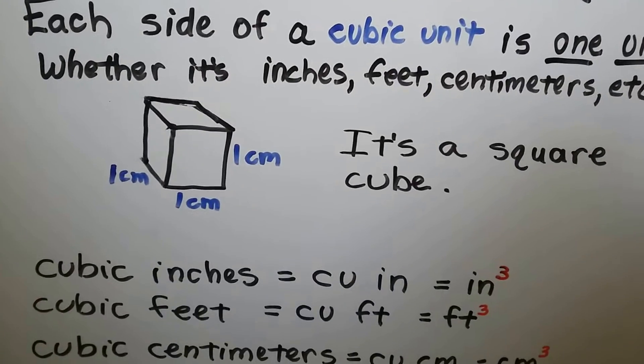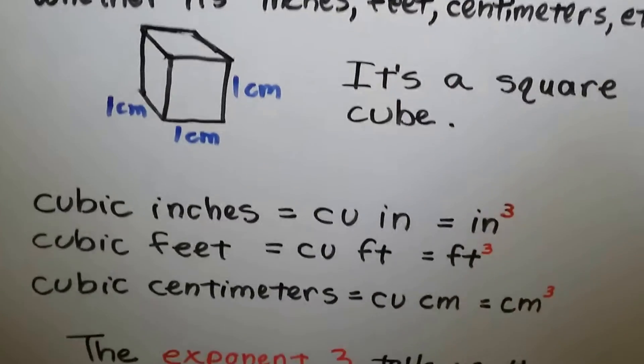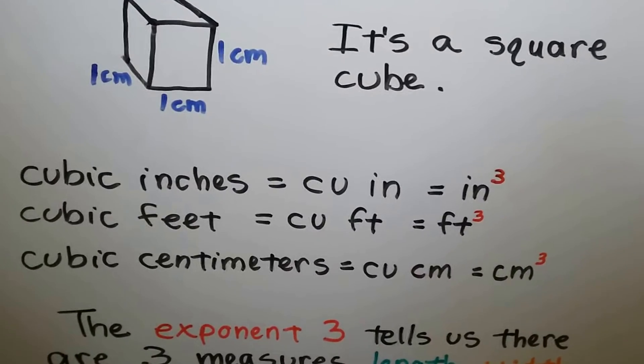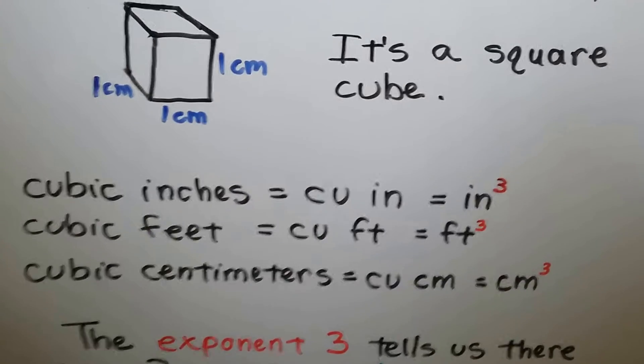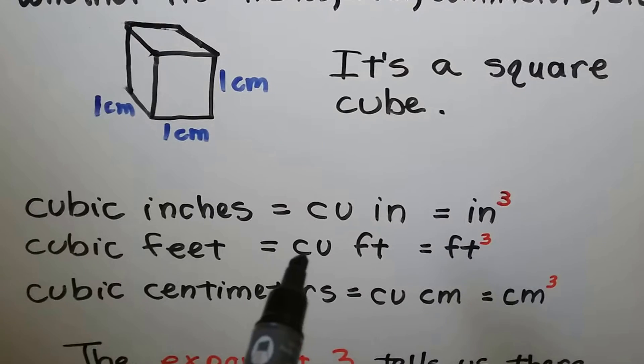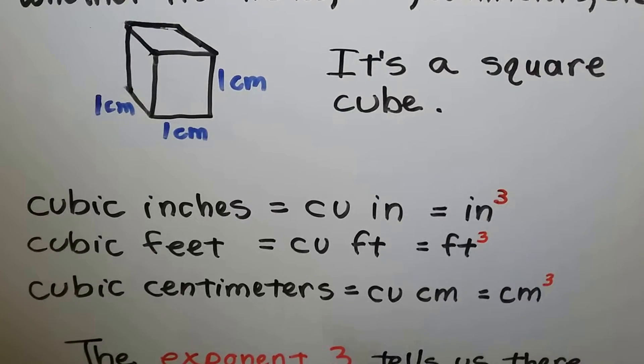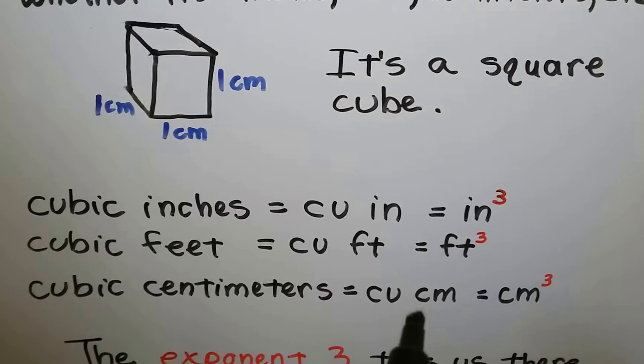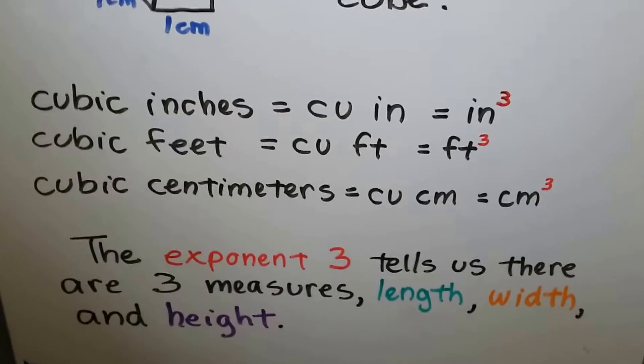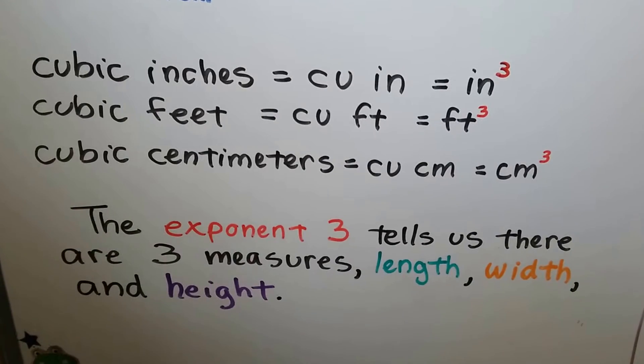So this is one centimeter cubed because every side is a centimeter. We would write it as cu in for cubic inches. We could also write it with in for inches with a little three exponent. For cubic feet we can write cu ft or ft with a little three exponent. Cubic centimeters can be cu cm or cm with a little three exponent. That exponent three tells us there are three measures: length, width, and height.